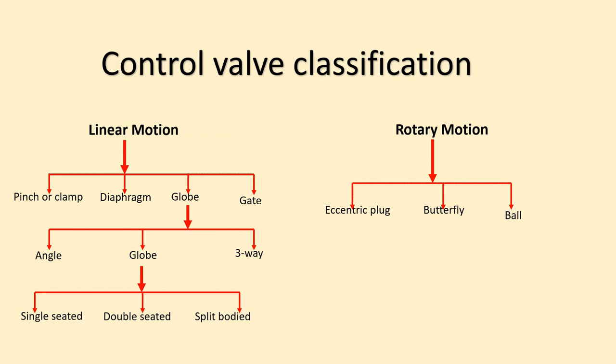Linear motion has different types of valve bodies: pinch or clamp type, diaphragm type, globe type, and gate type. The globe type of control valve is further classified into angle valve, globe valve, and three-way valve. The globe valve is further classified into single seated, double seated, and split body. These are the basic classifications of control valves that fall into the linear motion category.